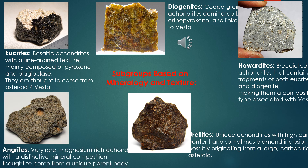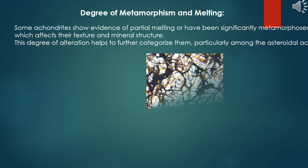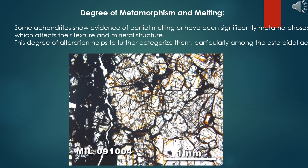Angrites: very rare, magnesium-rich achondrites with a distinctive mineral composition, thought to come from a unique parent body. Degree of metamorphism and melting: some achondrites show evidence of partial melting or have been significantly metamorphosed, which affects their texture and mineral structure. This degree of alteration helps to further categorize them, particularly among the asteroidal achondrites.